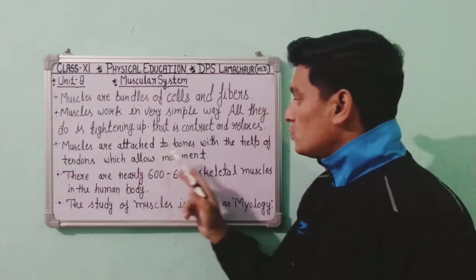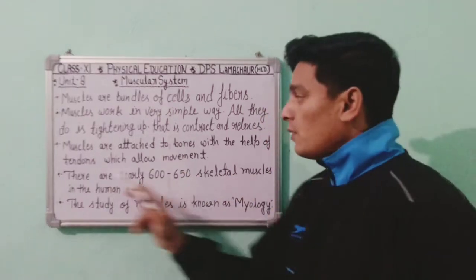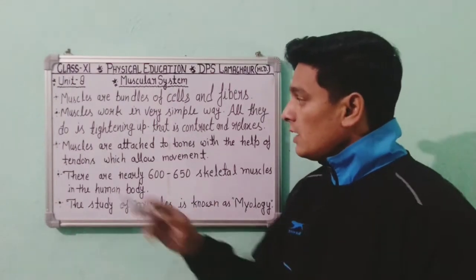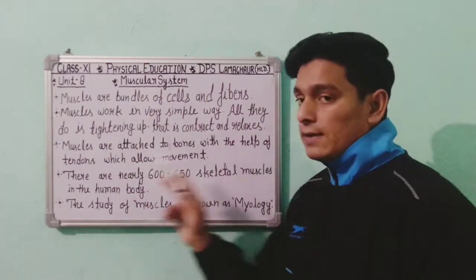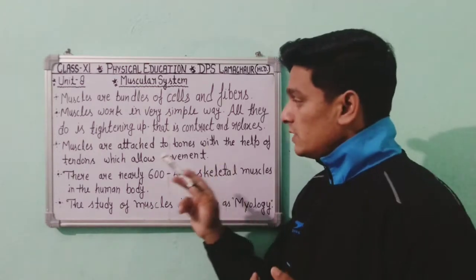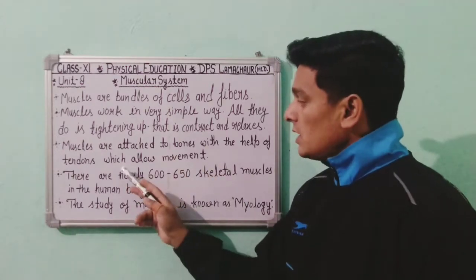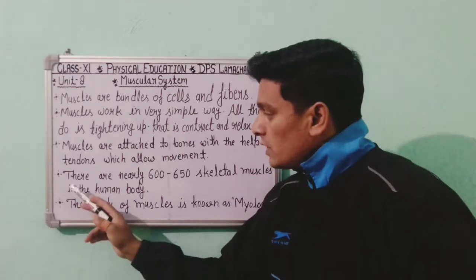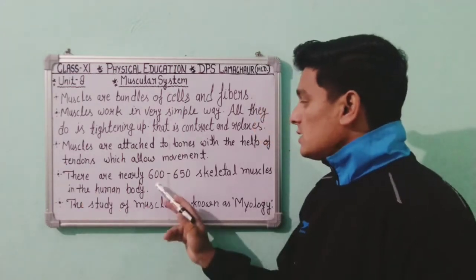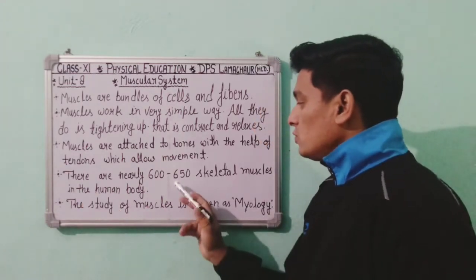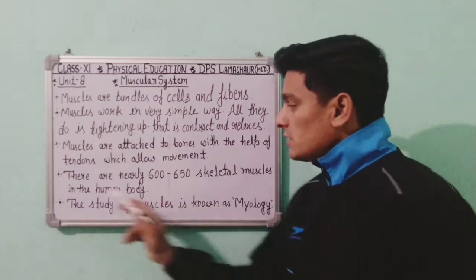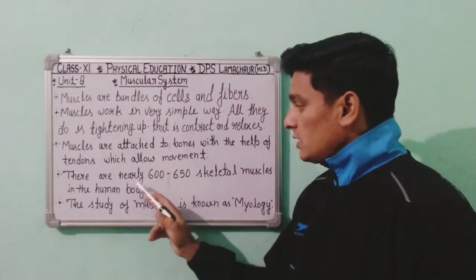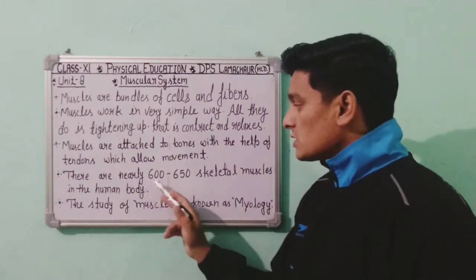Muscles are attached to bones with the help of tendons, which allow movement to the body. There are nearly 600 to 650 skeletal muscles in the human body — it is not a fixed number, it is approximately 600 to 650.